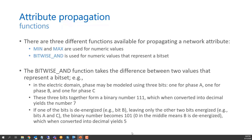Three propagation function types are available: min, max (for numeric values), and bitwise AND (for numbers representing bit-set collections). Bitwise AND takes two values representing a bit set and ANDs them at the bit level. In the electric domain, phases can be modeled using three bits — one for phase A, one for phase B, one for phase C. ABC enabled is binary 111 (decimal 7). If phase B is de-energized, the binary becomes 101 (decimal 5), clearly representing the de-energized state.